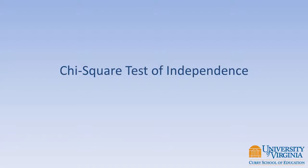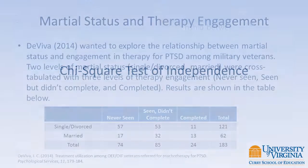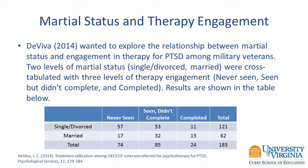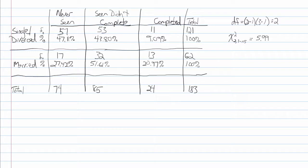This lesson covers the Chi-Square Test of Independence using data from DVIVIA 2014. Row percentages have been added to the contingency table. 47% of single-divorce veterans and 27% of married veterans have never been treated for PTSD. We would like to test the hypothesis that marital status is related to therapy completion, against a null hypothesis that these two variables are unrelated.